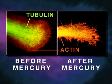Shown here is a neurite growth cone stained specifically for tubulin and actin, before and after mercury exposure. Note that the mercury has caused disintegration of tubulin microtubule structure.